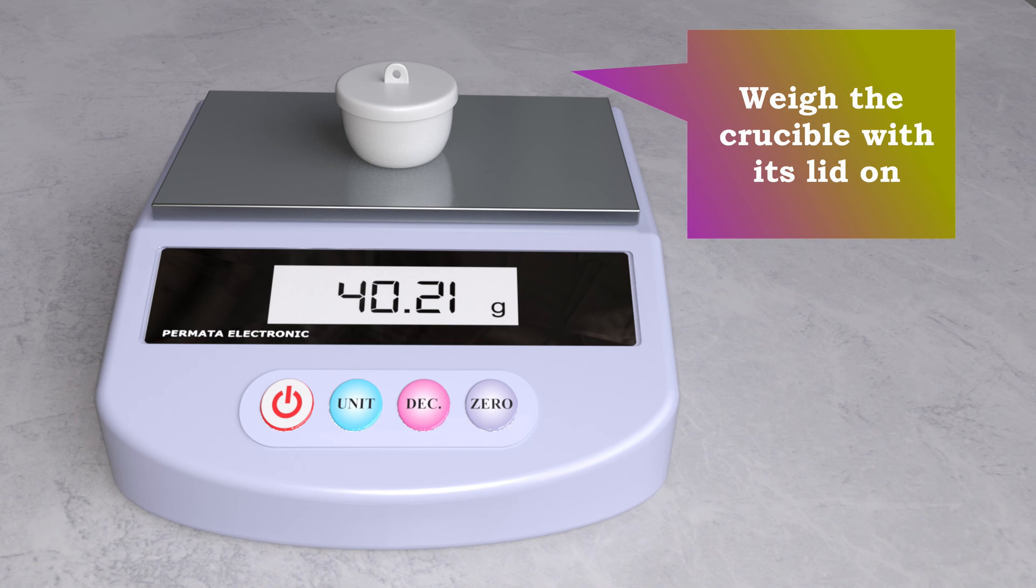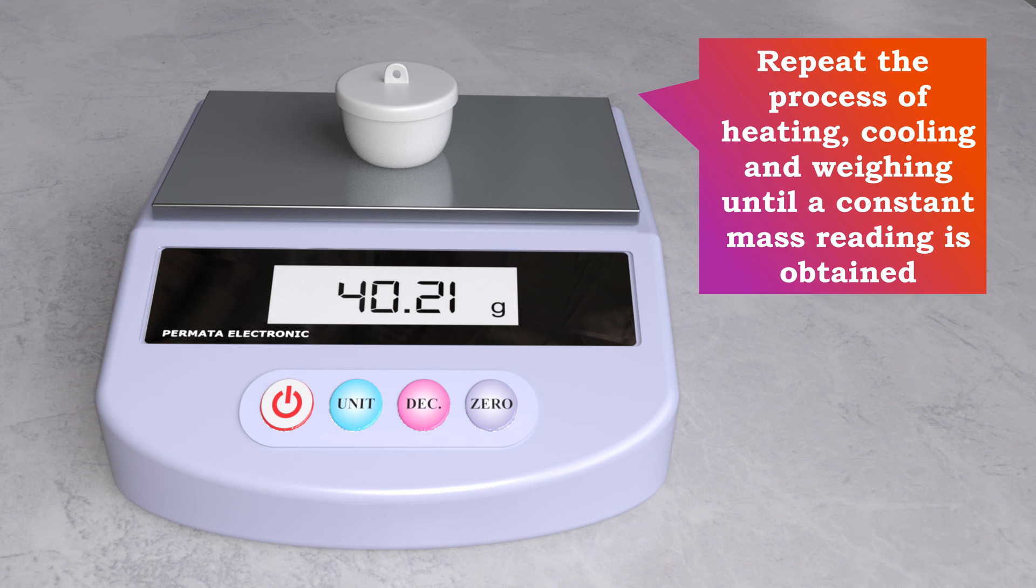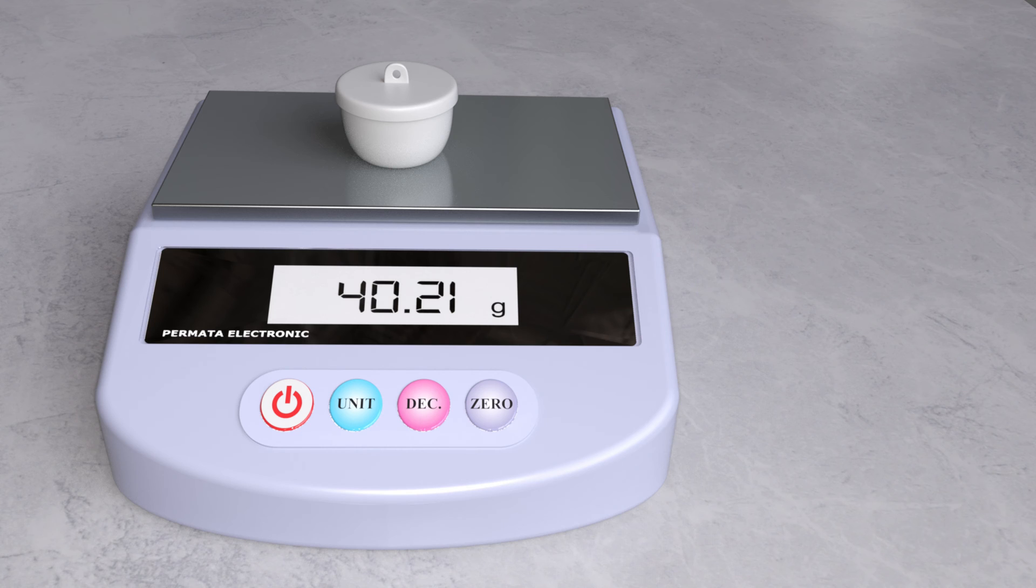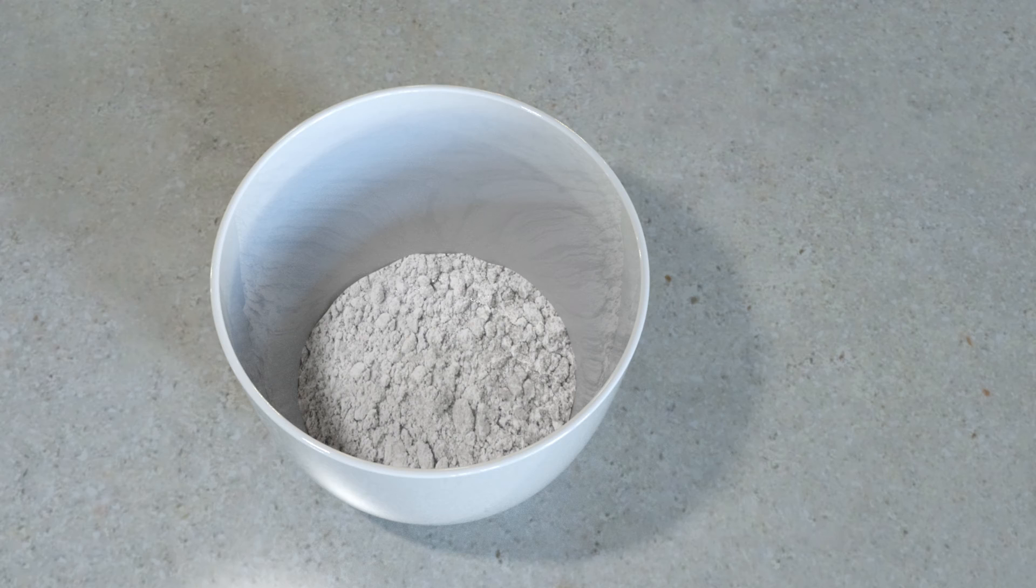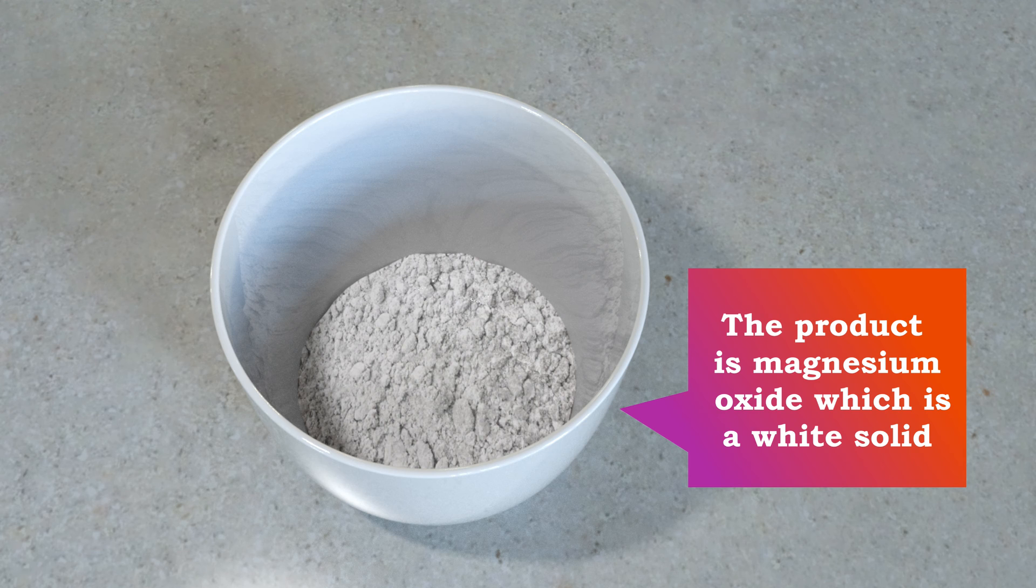Weigh the crucible with its lid on. Repeat the process of heating, cooling and weighing until a constant mass is obtained. Record the reading of 40.21 grams into the table. The product is magnesium oxide, which is a white solid.